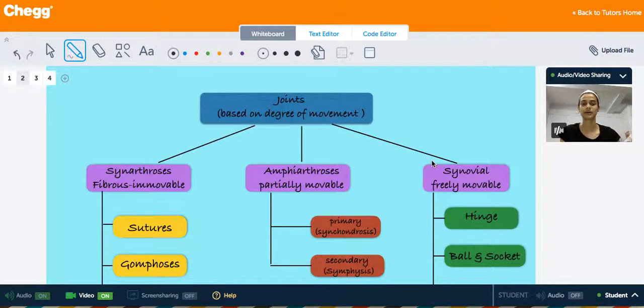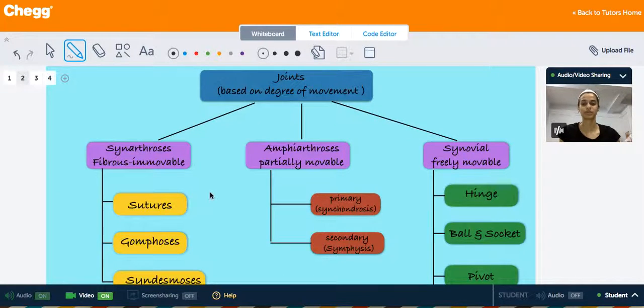Based on the degree of movement allowed by the joints, they are classified as synarthrosis, amphiarthrosis, and synovial joints. The synarthrosis are the immovable joints, and what holds these joints together is basically fibrous tough tissue.